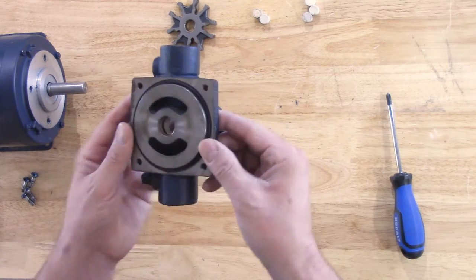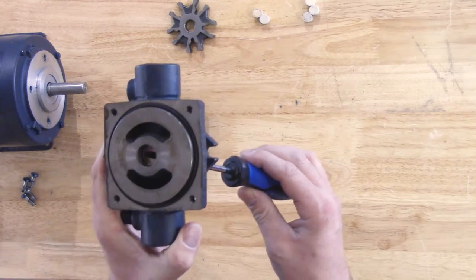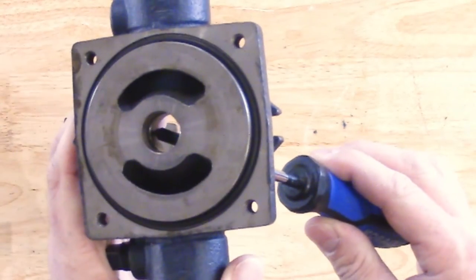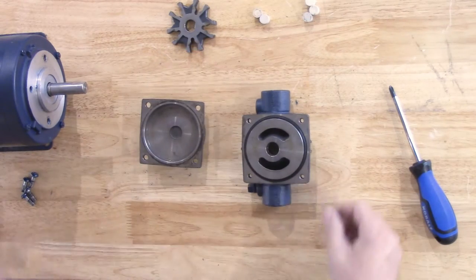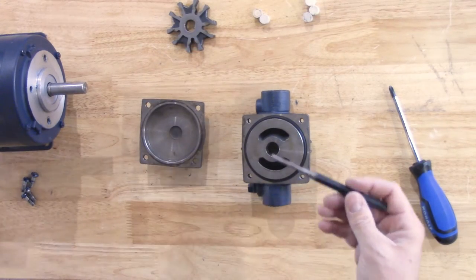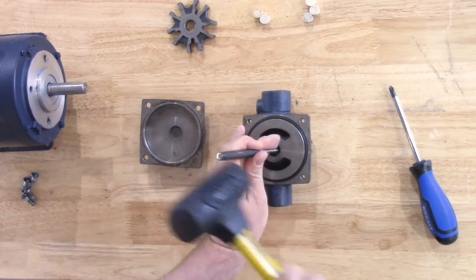With these components removed, now we can see the seal on the other side that we will be driving out from this side. This is where we can use a punch and a hammer to tap that seal out from this other side.